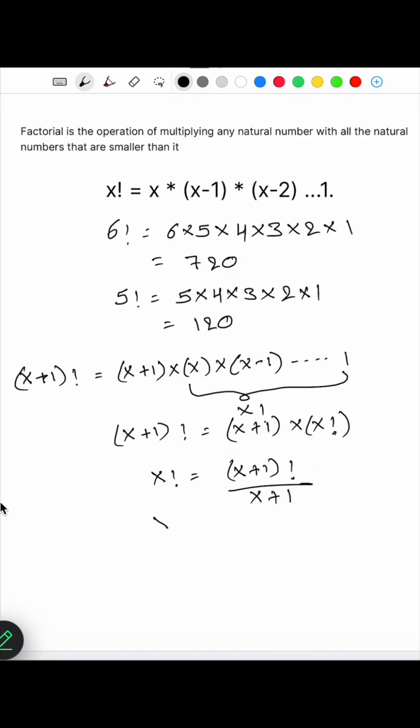Now substitute x is equal to 0. 0 factorial is equal to 0 plus 1 factorial divided by 0 plus 1. It is equal to 1 factorial divided by 1 which is equal to 1. So 0 factorial is equal to 1.